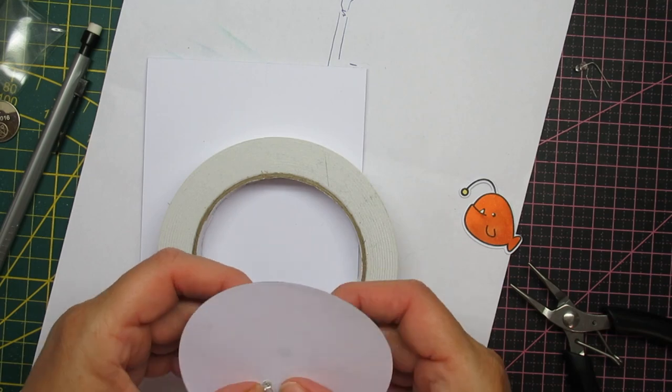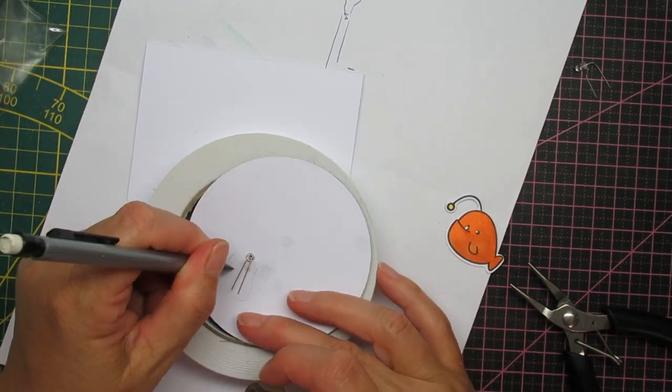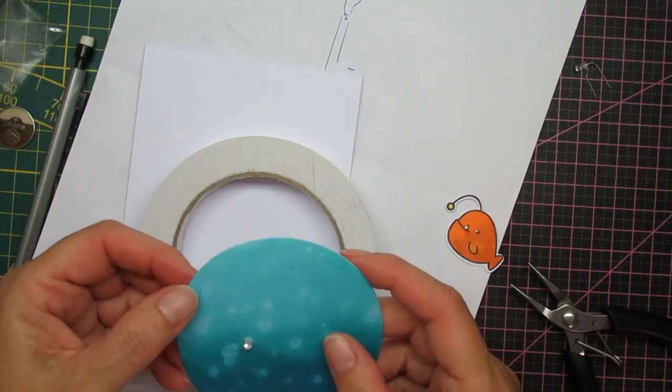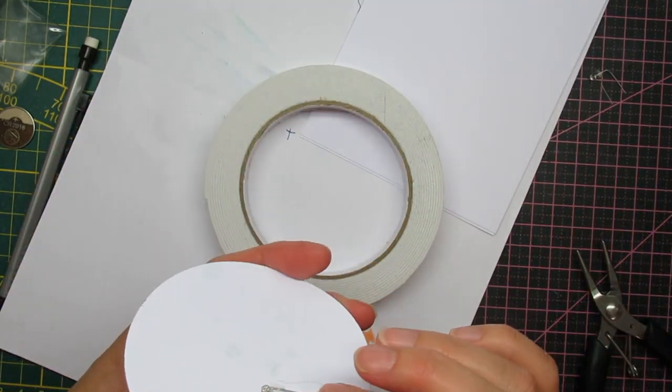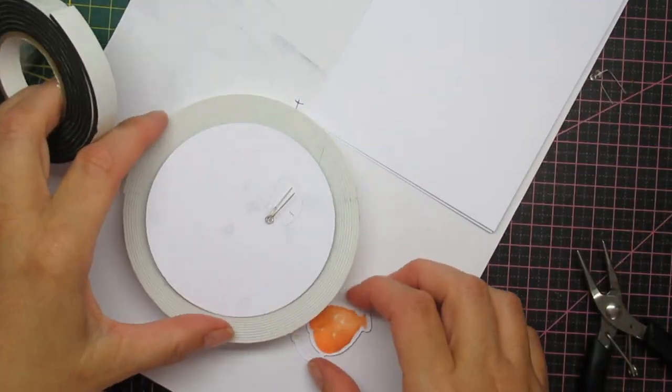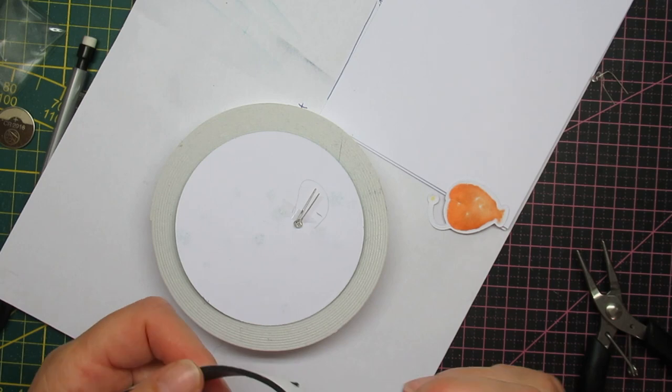And I'm also doubling up the circle. Because I thought this is a little bit thin. And you might see through it. I didn't even actually check it. I just did it before I knew it was needed. But you can see it's quite bendy.